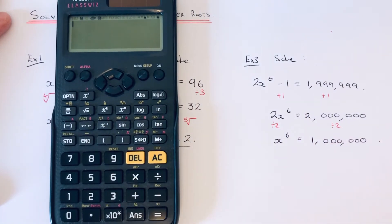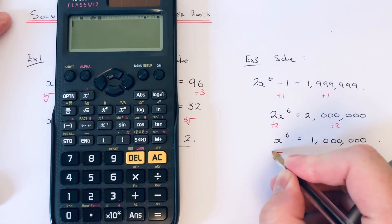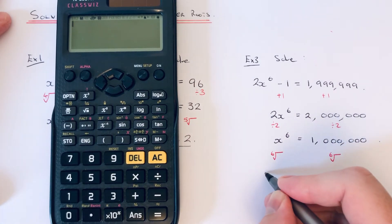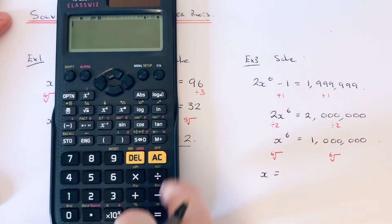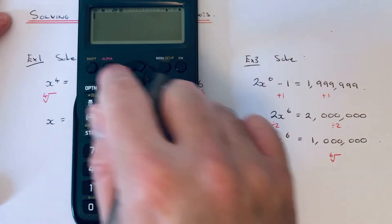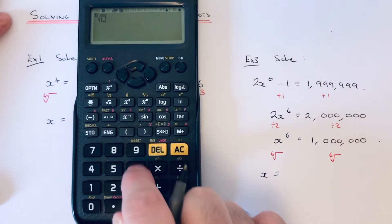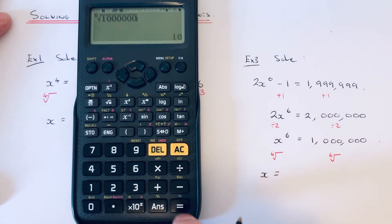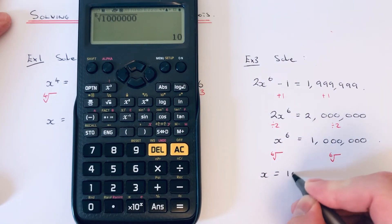The opposite to power of 6 is to do the sixth root on both sides. If we do the sixth root of a million, that gives us x equals 10.